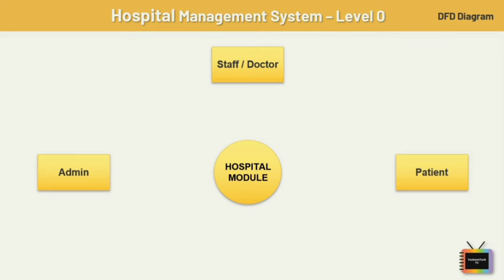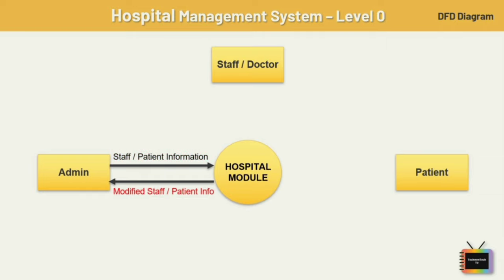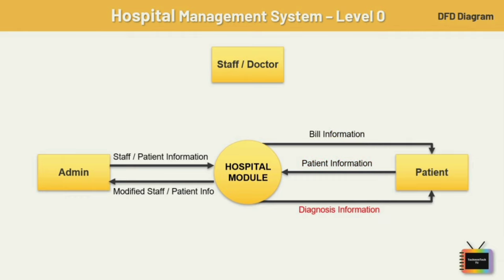Let's see the relationships between the processes and entities. Admin will send patient and staff information to the hospital module process, and the hospital module will send updated and modified information back to admin. The patient will send their information to the hospital module, and the hospital will send bill information and diagnosis info to the patient. The diagnosis info is sent by the doctor or staff to the hospital module, and the hospital will also send a list of patients and reports to the doctor.